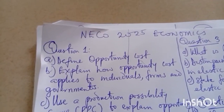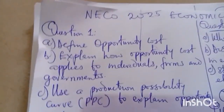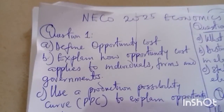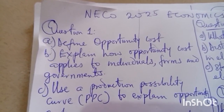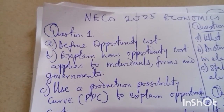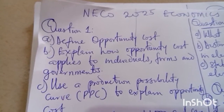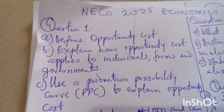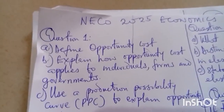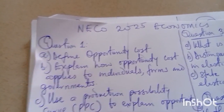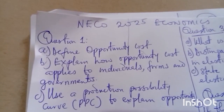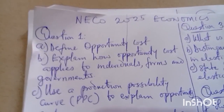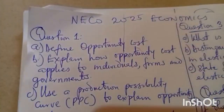Question one asks you to define opportunity cost. When you talk about opportunity cost, you are talking about what you let go when you have more than one thing to choose from. For example, I have 1000 naira and I want to buy a book and also buy food. The book costs 1000 naira and the food also costs 1000 naira. With 1000 naira I cannot buy both — I need to buy one and let go the other.